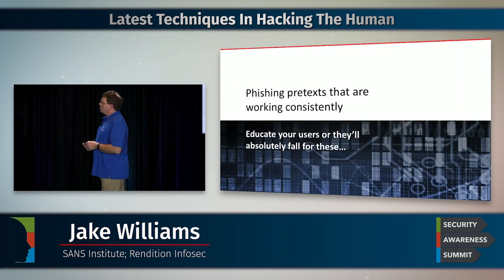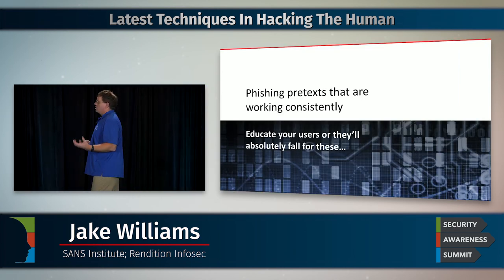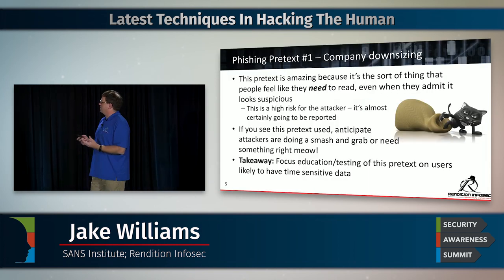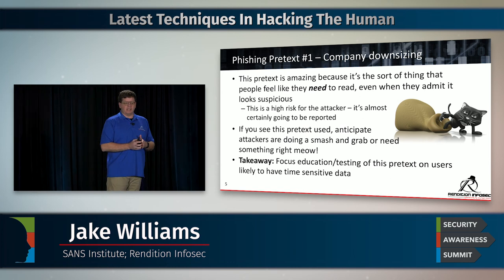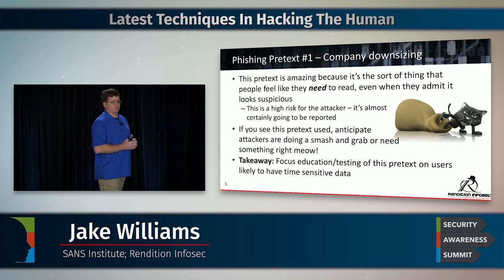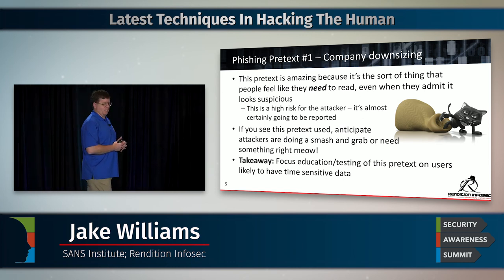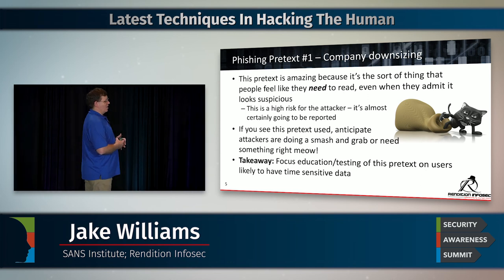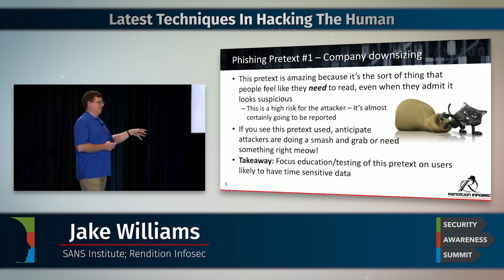Let's talk about phishing pretexts. If you don't educate your users, they're going to fall for these consistently. I've got seven that I'd like to start with. I'll tell you the number one that we see has a 100% success rate — someone's going to open this document, click on it, enable macros, whatever they need to do to see it. It's company downsizing.